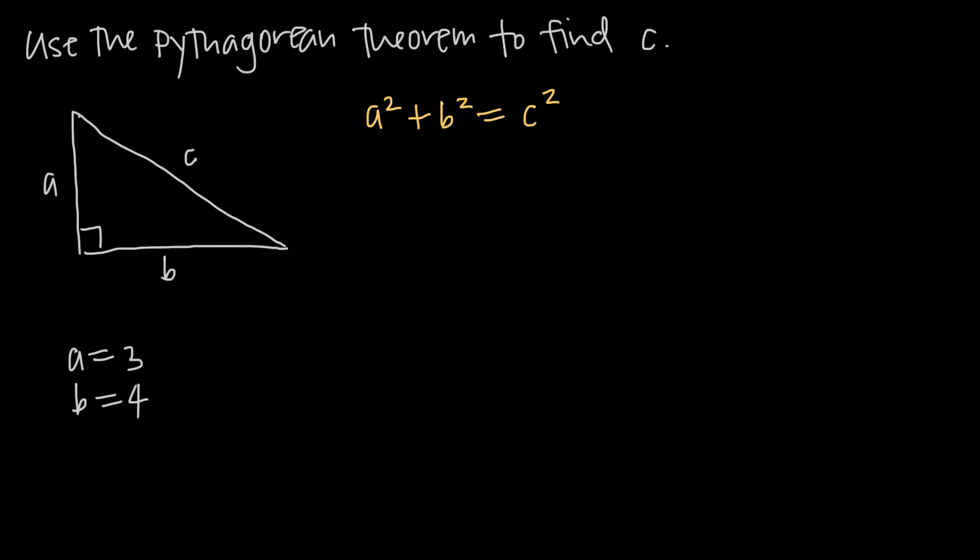In this video, we're talking about the Pythagorean theorem, which is a theorem that we use with right triangles to find the lengths of each of the sides of the triangle. Remember that a right triangle is a triangle where one of the angles is 90 degrees. This theorem can only be used with right triangles, not with any other type of triangles.